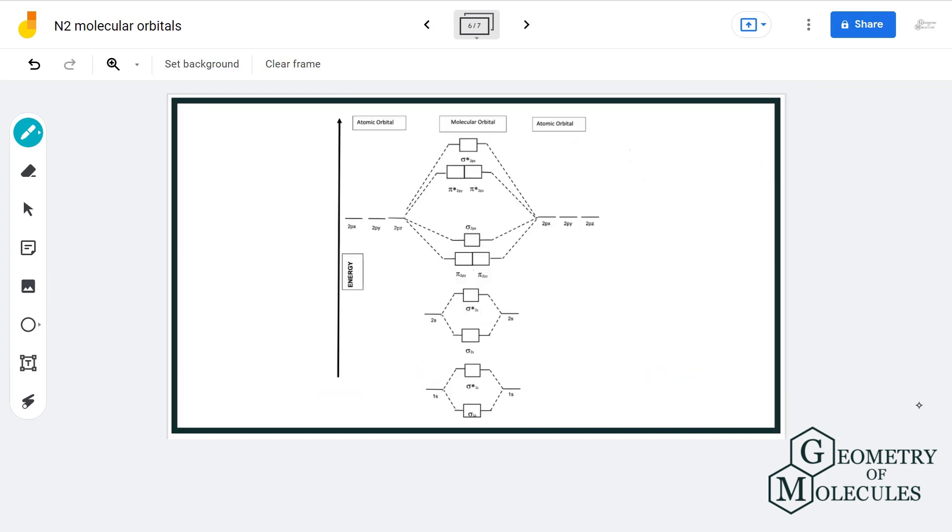This is what the arrangement of molecular orbitals will look like. These are the atomic orbitals of nitrogen which combine and form molecular orbitals of N2.